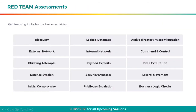Red teaming includes the below activities: discovery, leaked database, active directory misconfiguration, external and internal network exploit, phishing attempts, payload exploits, defense evasion, security bypasses, initial compromise, privilege escalation, command and control, data exfiltration, lateral movement, and business logic checks.